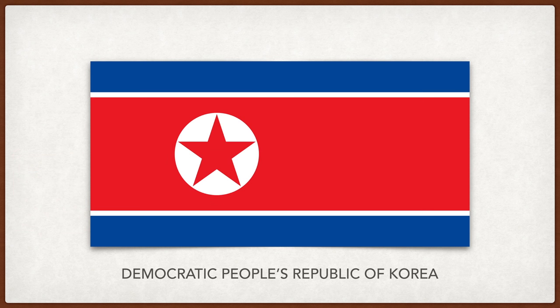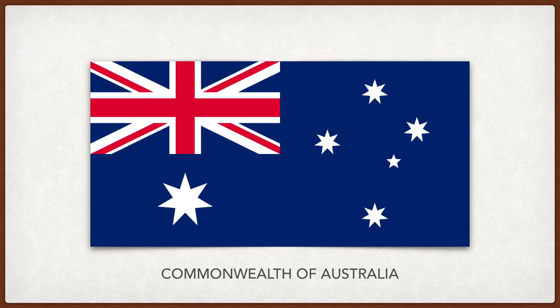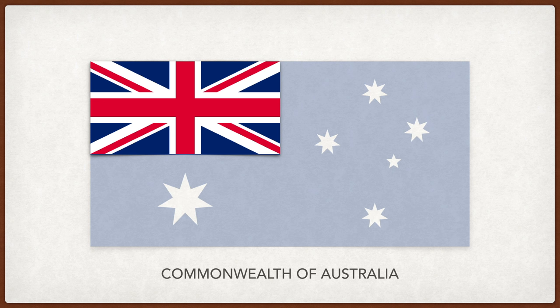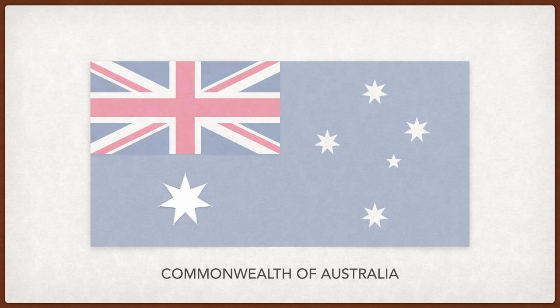North Korea. The red star is symbolic of communism, although references to communism have since been removed from North Korea's constitution. The red stripe represents revolution, the blue stripe peace, and the white purity. Australia. The inclusion of the entire UK flag represents the history Australia has with the British. Below it is the Commonwealth star, uniting it with the other former British colonies who now share a monarch. The Southern Cross is one of the most visible constellations in the Southern Hemisphere and has represented Australia since the early days of British settlement. The four main stars also symbolize justice, prudence, temperance, and fortitude.